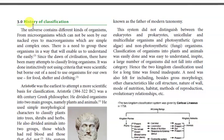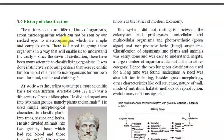This is chapter 3 in my book. Chapter 1 is biology, chapter 2 is biochemistry, and chapter 3 is the principles of classification. The universe contains different kinds of organisms — from microorganisms which cannot be seen by our naked eyes to complex ones. There is a need to group these organisms in a way that will enable us to understand them easily.